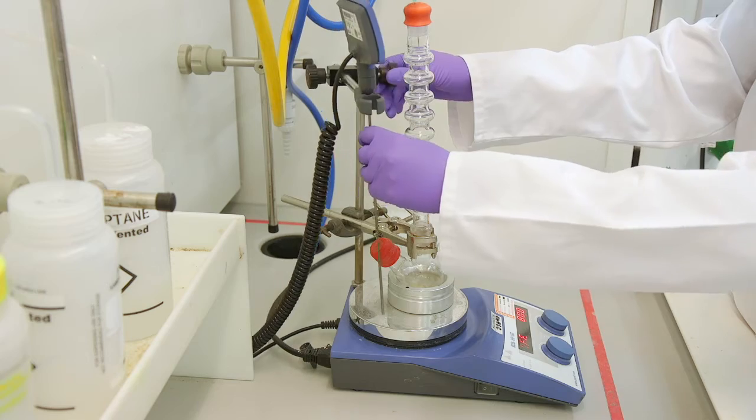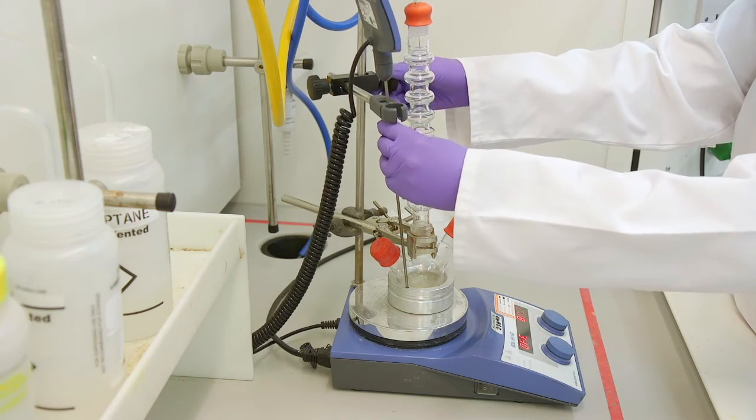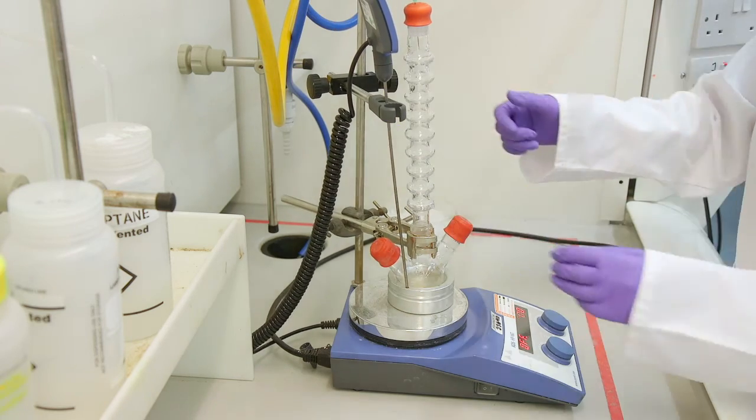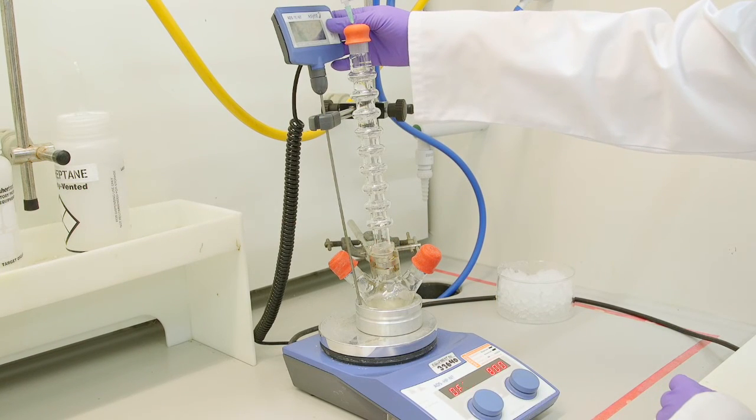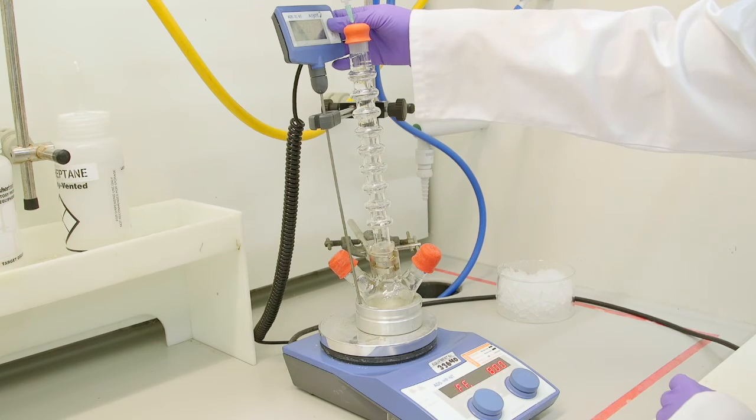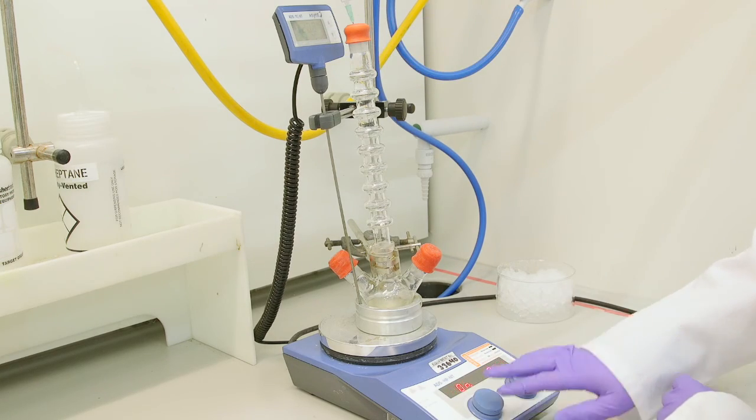The reaction can be monitored by titration to see if the product has been formed. Once you are happy you have reached a successful concentration of your Grignard or your reaction has been heating for five hours the reaction can now be stopped.